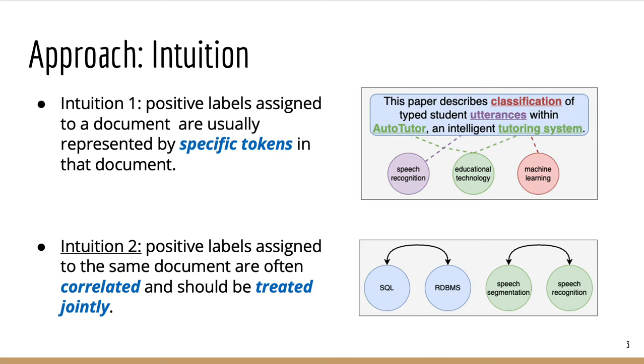Our approach is based on two intuitions. First is that relevant labels assigned to a document are usually represented by some specific tokens inside this document. And the second intuition is that relevant labels assigned to the same document are often correlated and they should be treated jointly.